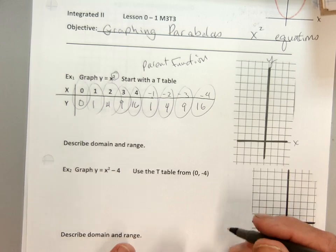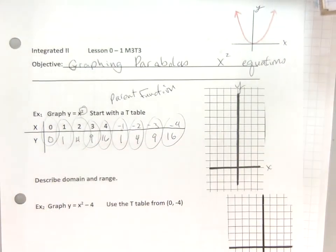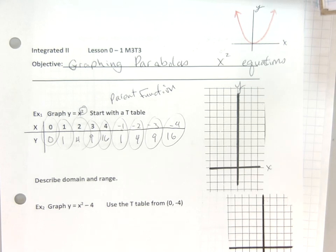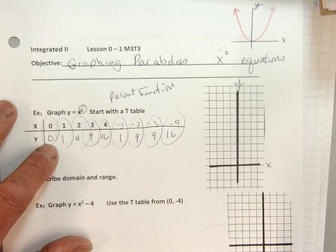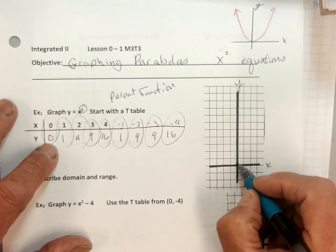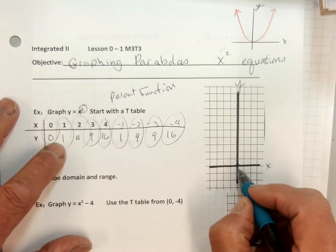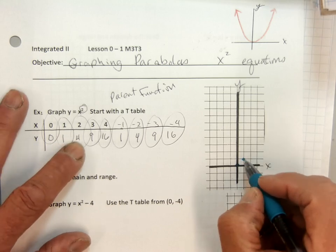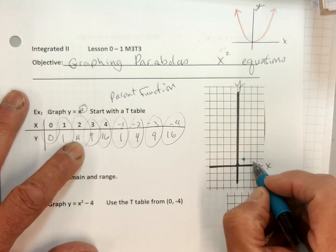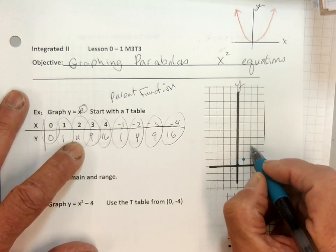Well, that's pretty easy. I'll do it in blue. Start with (0,0) — that's right there at the origin. (1,1): I go over 1, up 1. (2,4): I go over 2 and go up 1, 2, 3, 4.